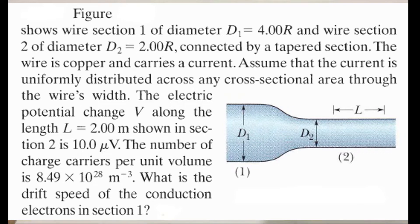From the figure, wire section 1 has diameter D1 equal to 4R and wire section 2 has diameter D2 equal to 2R, connected by a tapered section. The wire is copper and carries a current, uniformly distributed across any cross-sectional area. The electric potential change V along length L equal to 2m shown in section 2 is 10μV. The number of charge carriers per unit volume is 8.49×10²⁸ m⁻³.